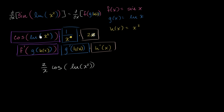It seemed like a very daunting derivative, but we just ask: what's the derivative of sine of something? That's cosine of something. Then we go in one layer — the derivative of ln of something is 1 over that something. So we got 1/x², and the x squared got canceled out. Finally, the derivative of the innermost function — it's like peeling an onion — was just 2x, giving us our answer of 2/x · cos(ln(x²)).